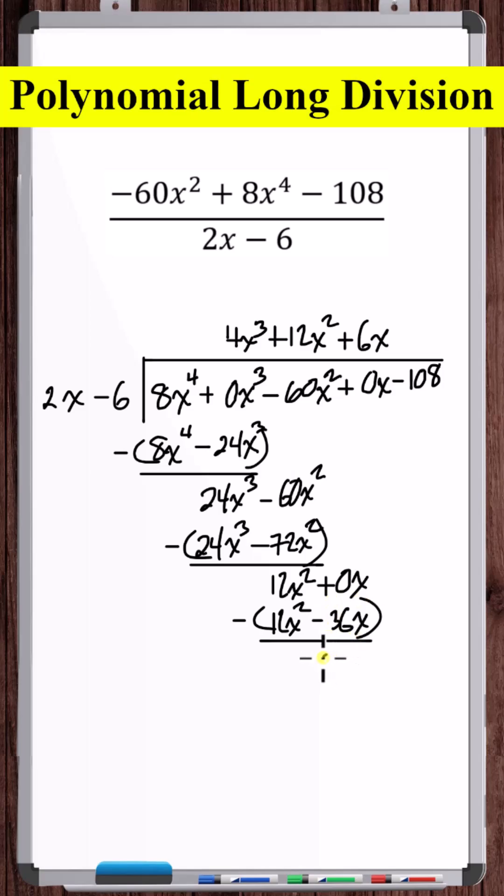0x plus 36x is 36x. Bring down the minus 108. 36x divided by 2x is 18.